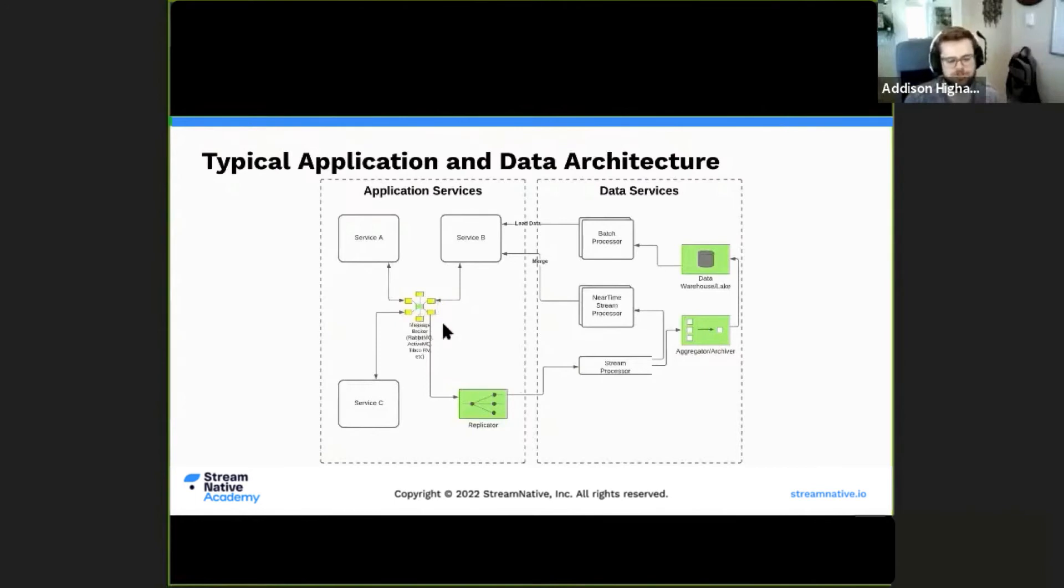They'll often need some of this messaging data. That data may be replicated into a streaming system like Kinesis or Kafka. The data then may need to be moved into long-term data warehouses for batch processing, as well as being used for near real-time stream processors that process data as it comes in.